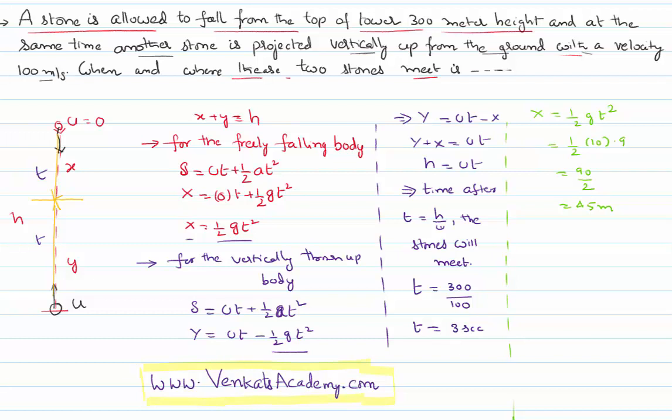That means the freely falling body covers a distance of 45 meters before it meets the other body. It is obvious that y will become h minus x, h is 300 minus 45, so its value will be automatically 255 meters.